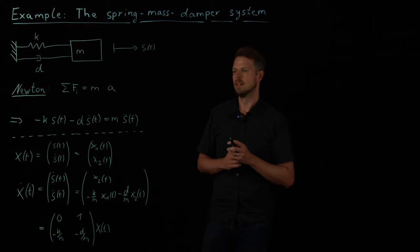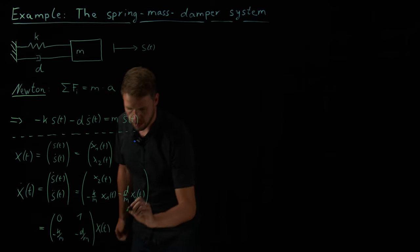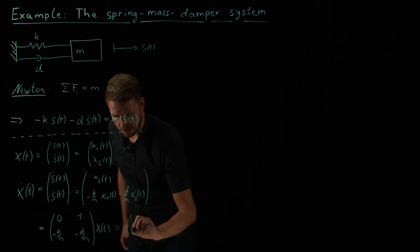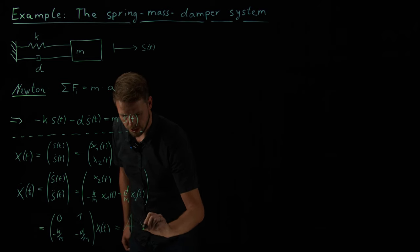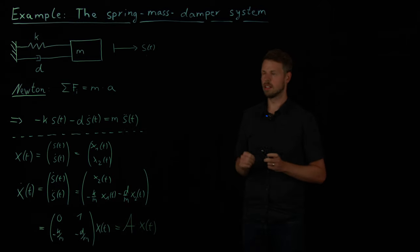So very, very nice. And we see that we actually have a system of the form that we had before. This is our a times x of t. Okay, so very simple example where we get such a linear system.